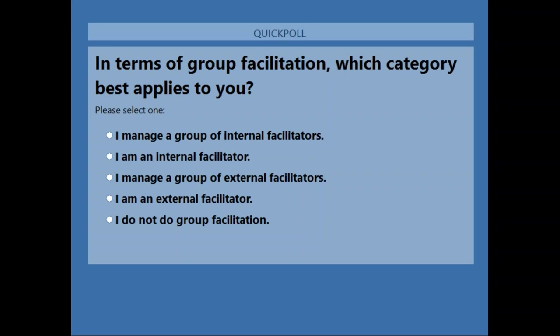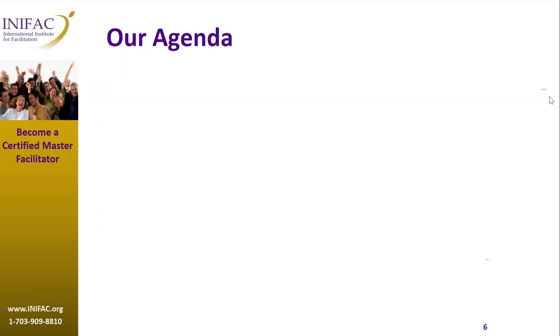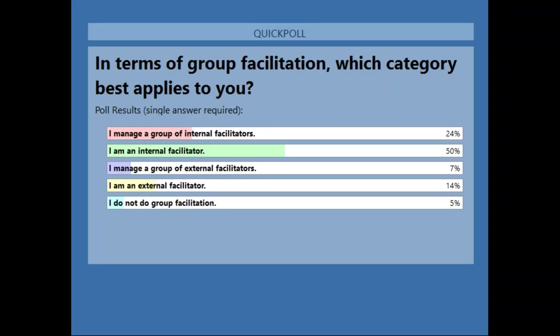We're rocking and rolling with about 60% responding. Looking at the poll results: 24% actually manage a team, 50% are internal facilitators, 7% manage a group facilitation, 14% are externals, and 5% do not do group facilitation. Over 50 people are on the call. Taking the 24% and 50% together, 74% are the primary audience we're targeting our comments for.